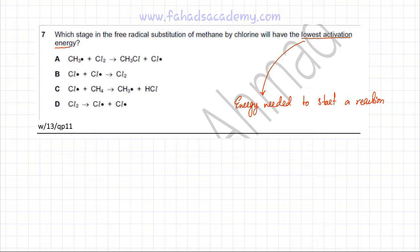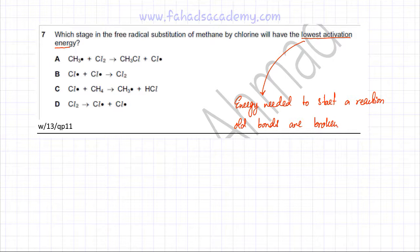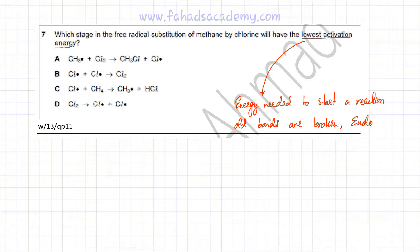Why do you need activation energy? The reason is because you need to break the old bonds first. Old bonds are broken initially. Whenever you have a reaction, most of the time the first thing you need to do is get rid of the old bonds. Only then would new bonds be formed. Old bonds are broken and this process is endothermic — it requires energy. So, activation energy is the energy needed to break old bonds.